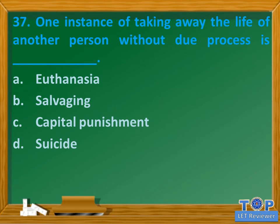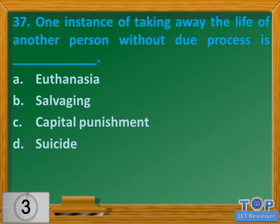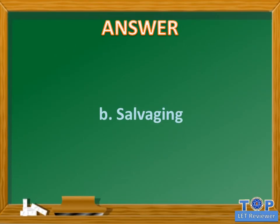Question number 37. One instance of taking away the life of another person without due process is blank. A. Euthanasia. B. Salvaging. C. Capital punishment. D. Suicide. Answer: B. Salvaging.